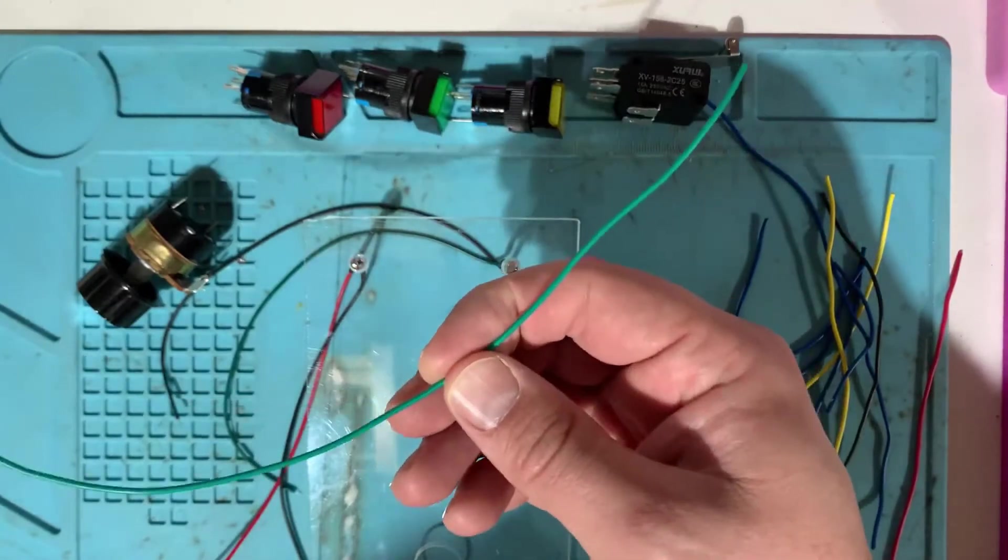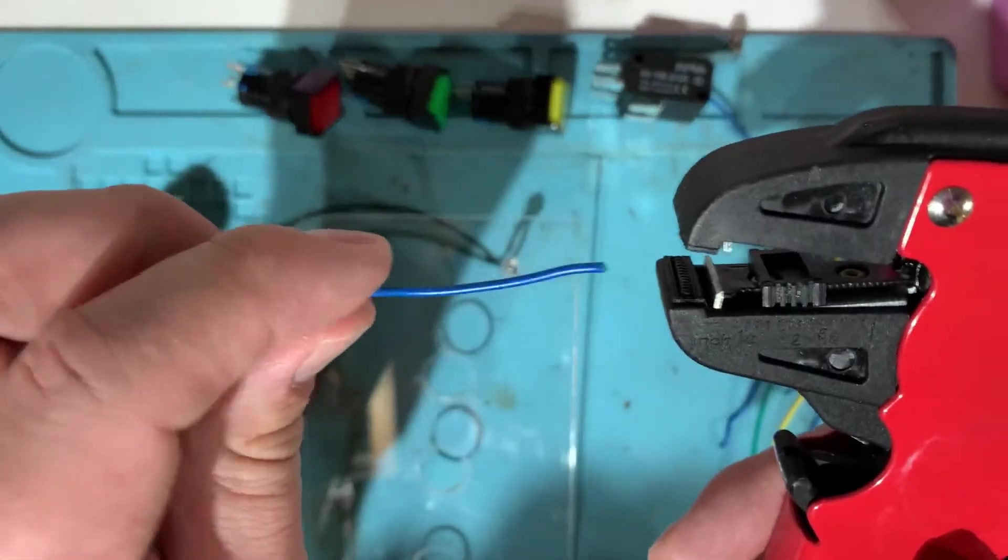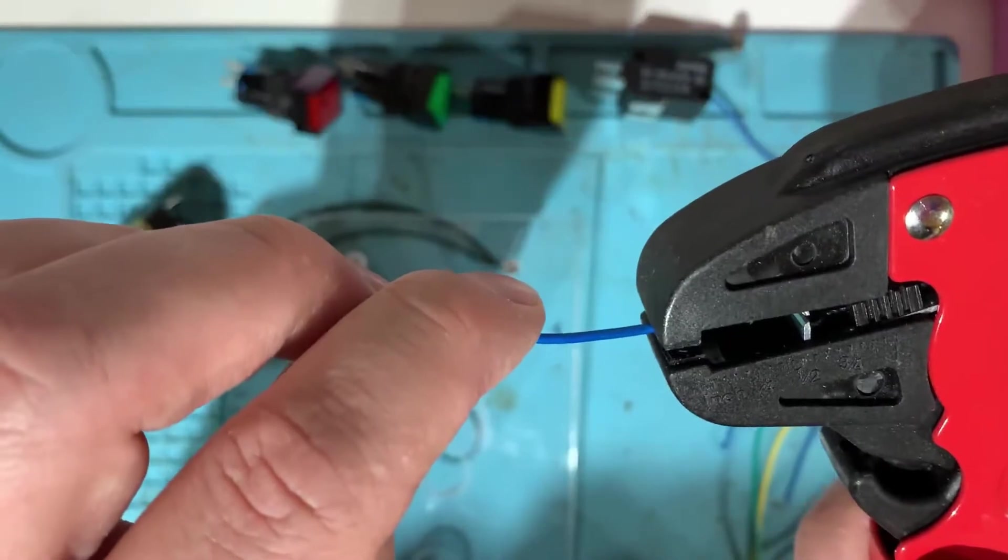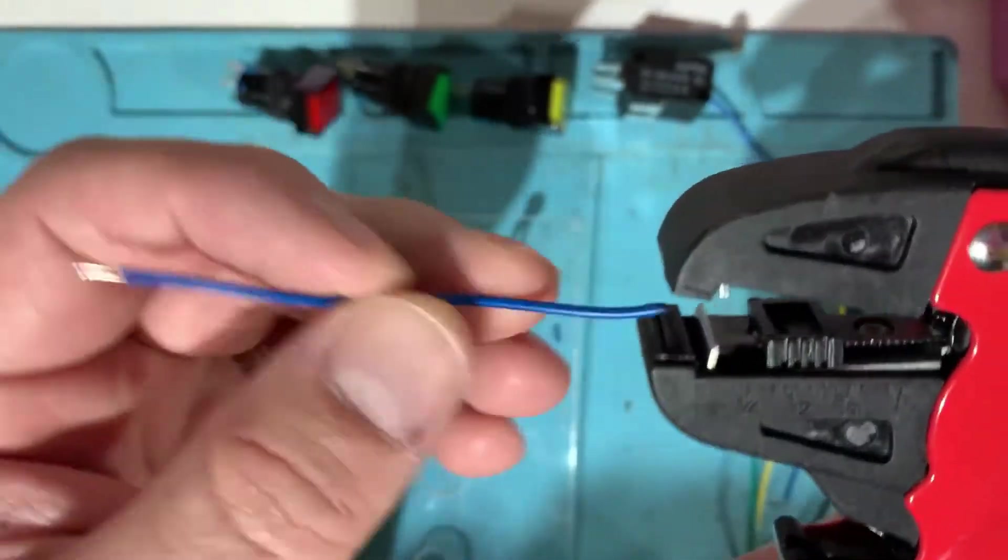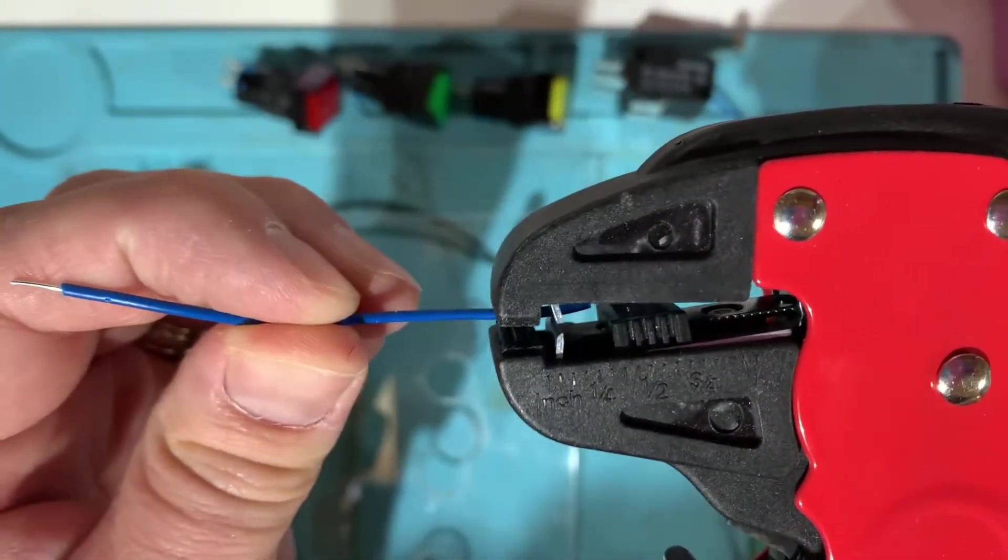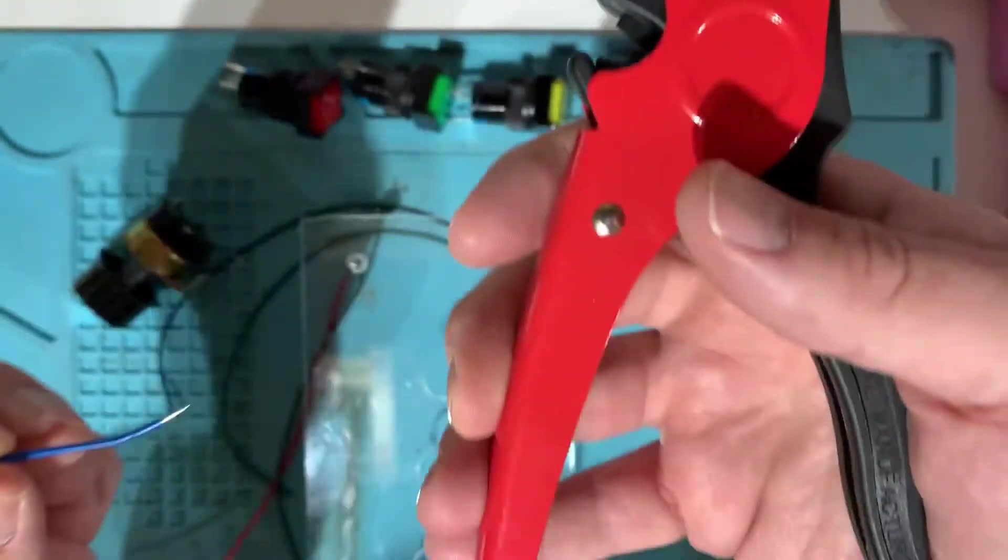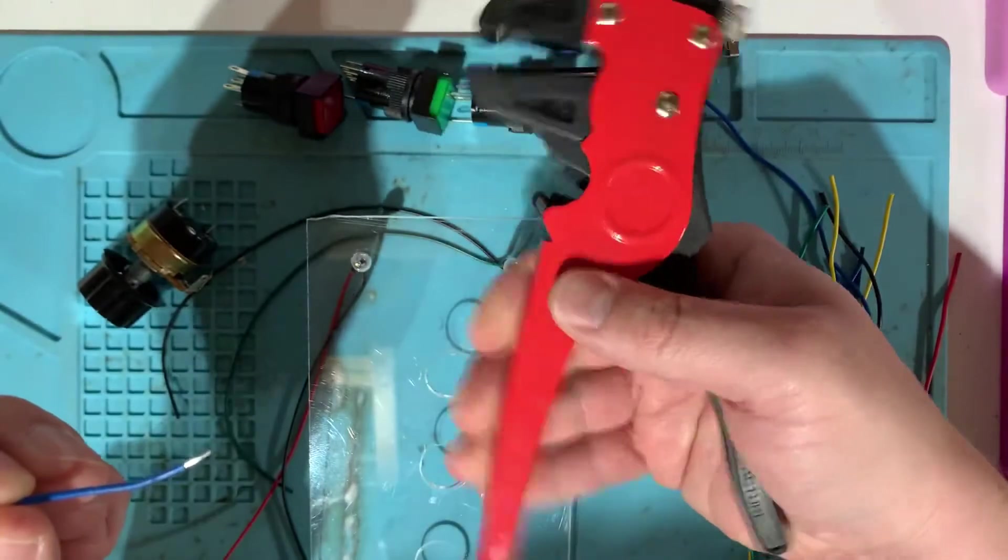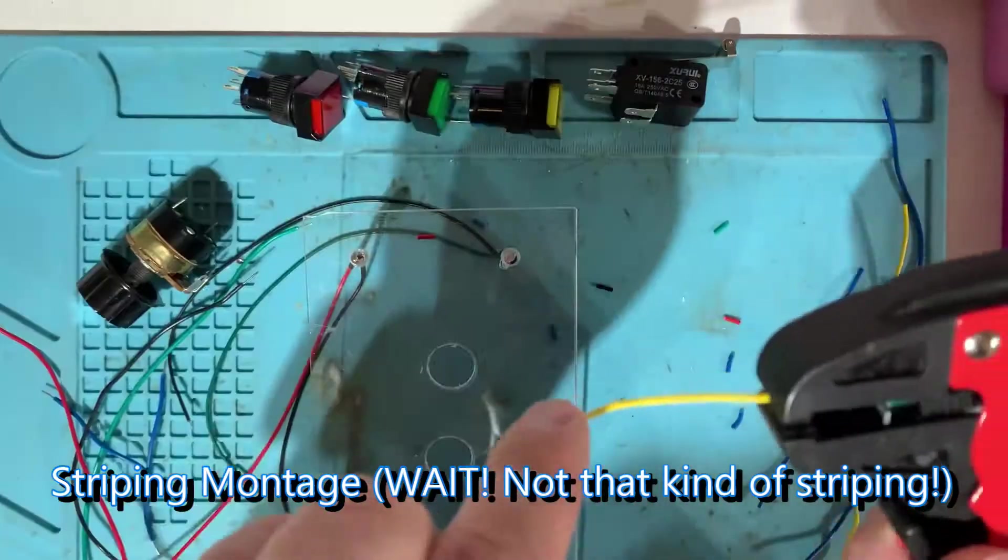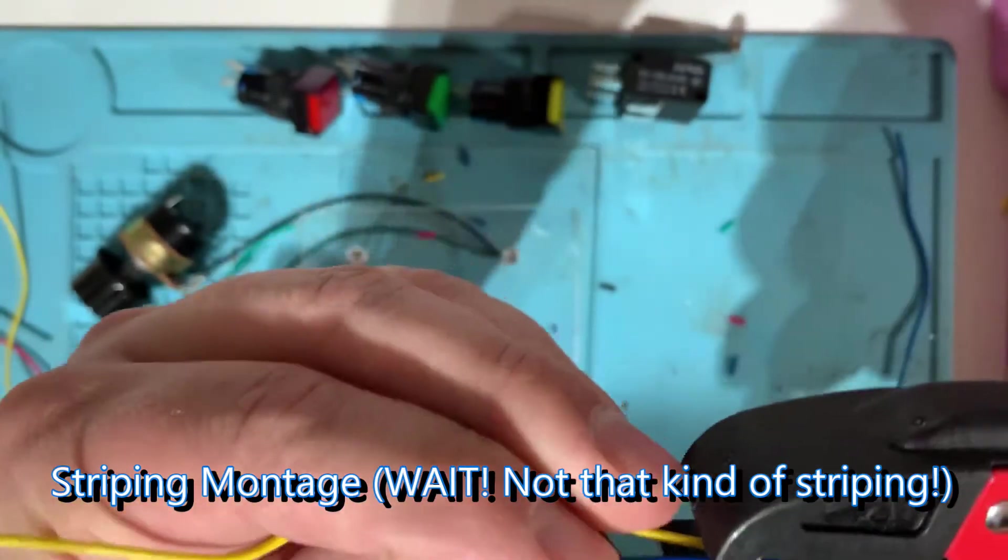And we're going to need several cutoffs of 20 gauge wire. You can strip the wires however you want. This is the easiest I've seen. Stick the wire in a little more than an eighth. Stick it. I'm just squeezing. That's how it does.